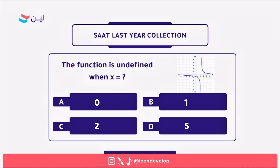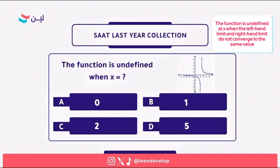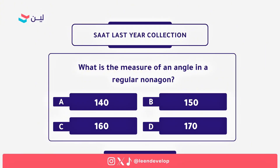The next question: the function is undefined when x equals what? There is an important rule that says a function is undefined at point x when the left-hand limit and the right-hand limit do not converge to the same value. In this figure, when x equals that point, the function goes up on one side and down on the other — so that is the point where the function is undefined. The answer is C.